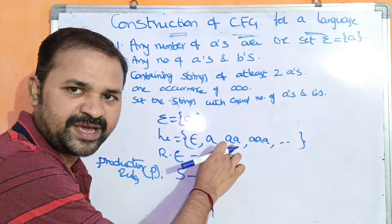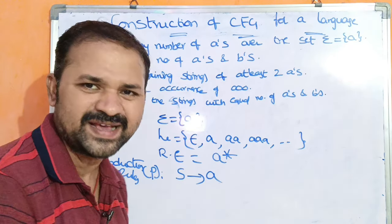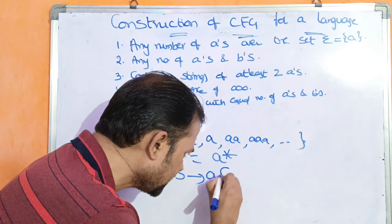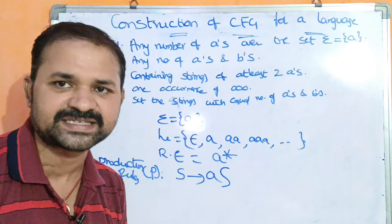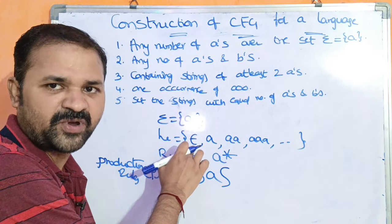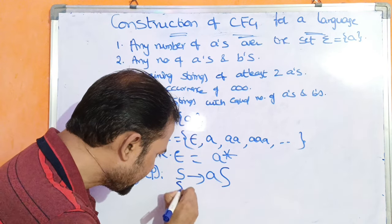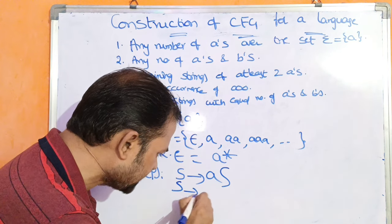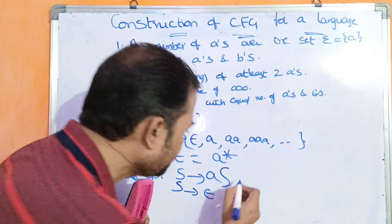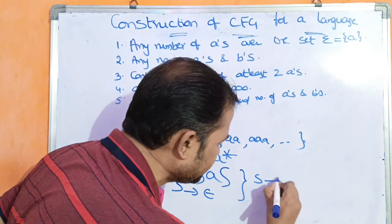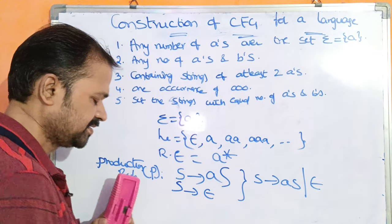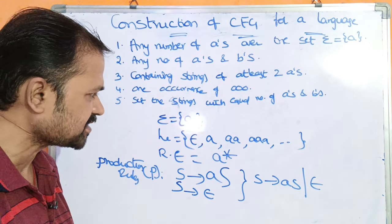After A we can have two A's. We can get two A's by recursively calling the start symbol S. So S implies A S. And the first string is zero number of A's, which is epsilon. So S implies epsilon. These two are the production rules. We can write them as: S implies A S or epsilon.